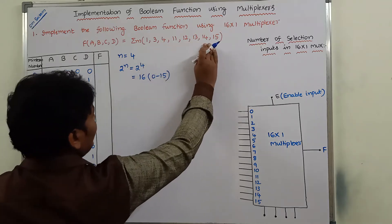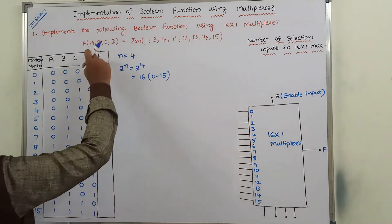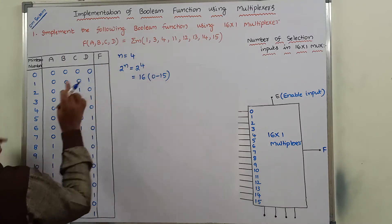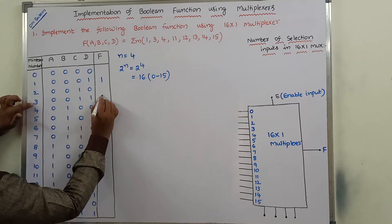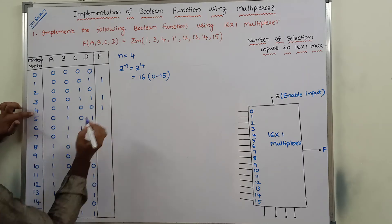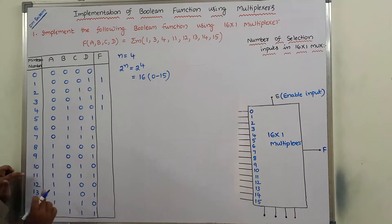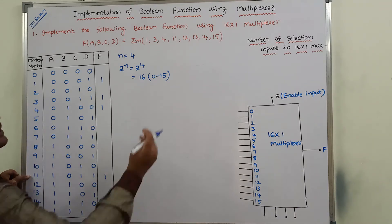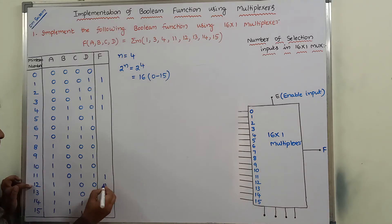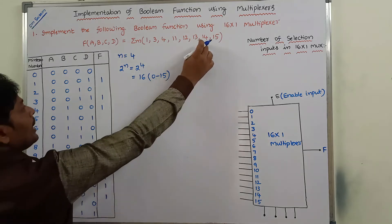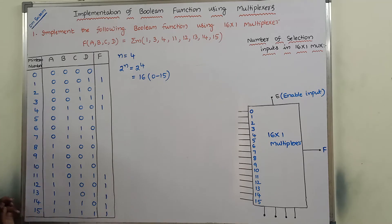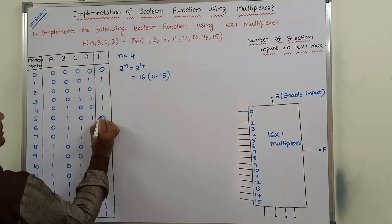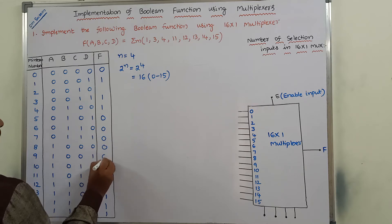For minterms 1, 3, 4, 11, 12, 13, 14, and 15, the Boolean function produces output 1. For the remaining minterms, the Boolean function produces output 0.